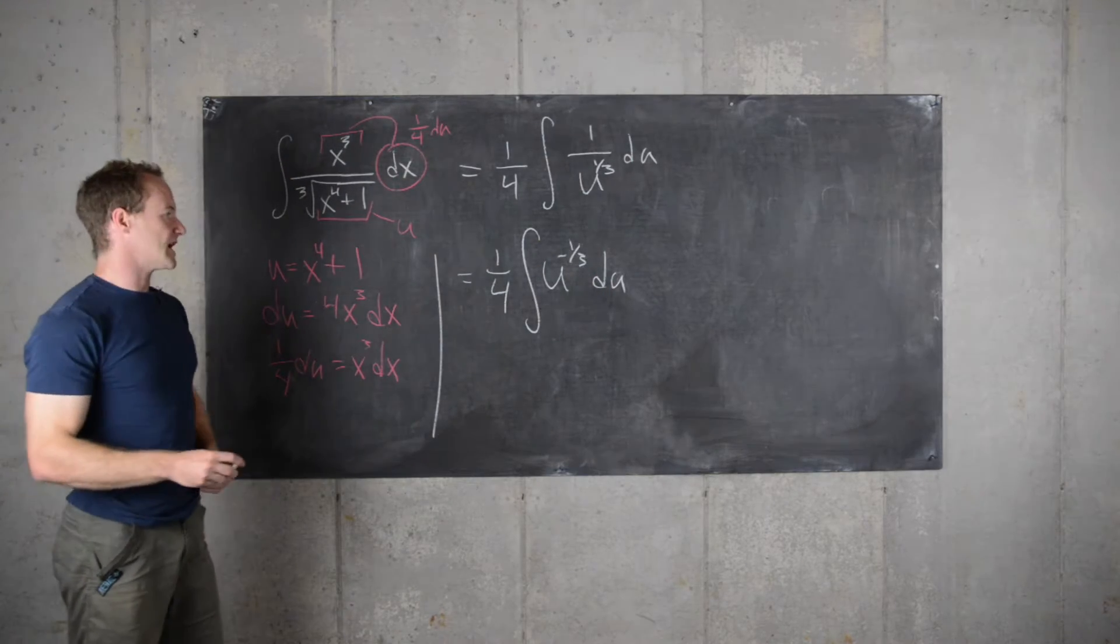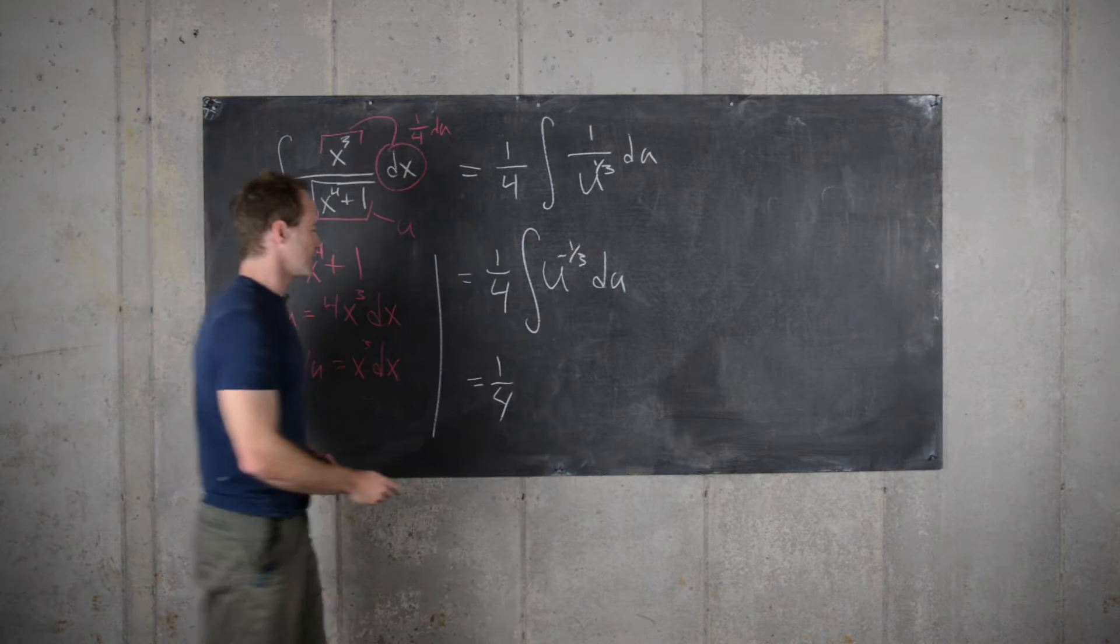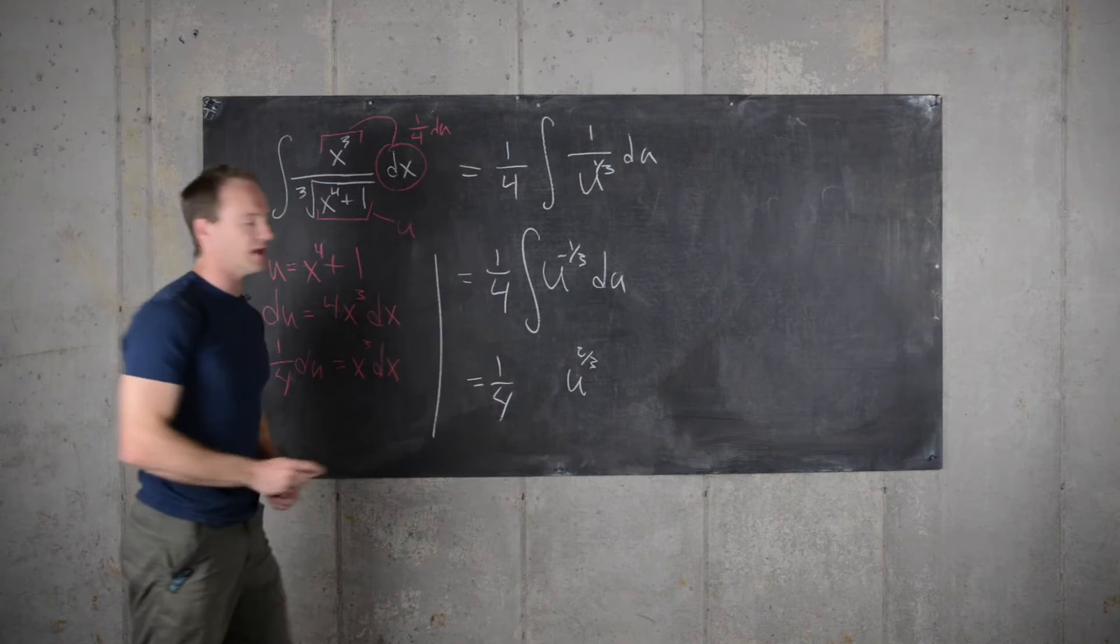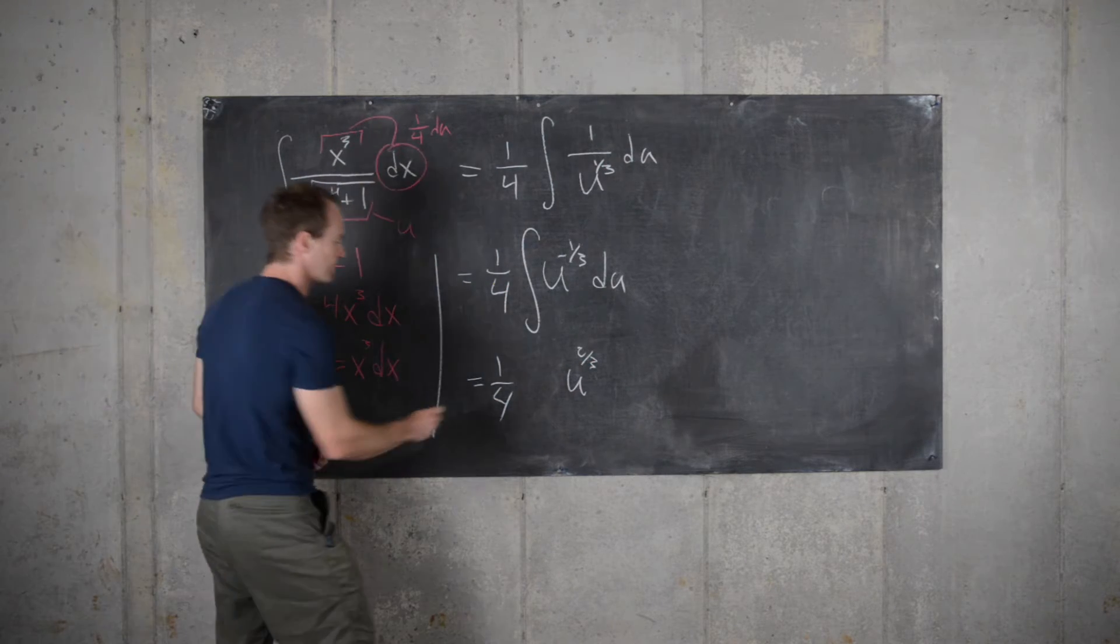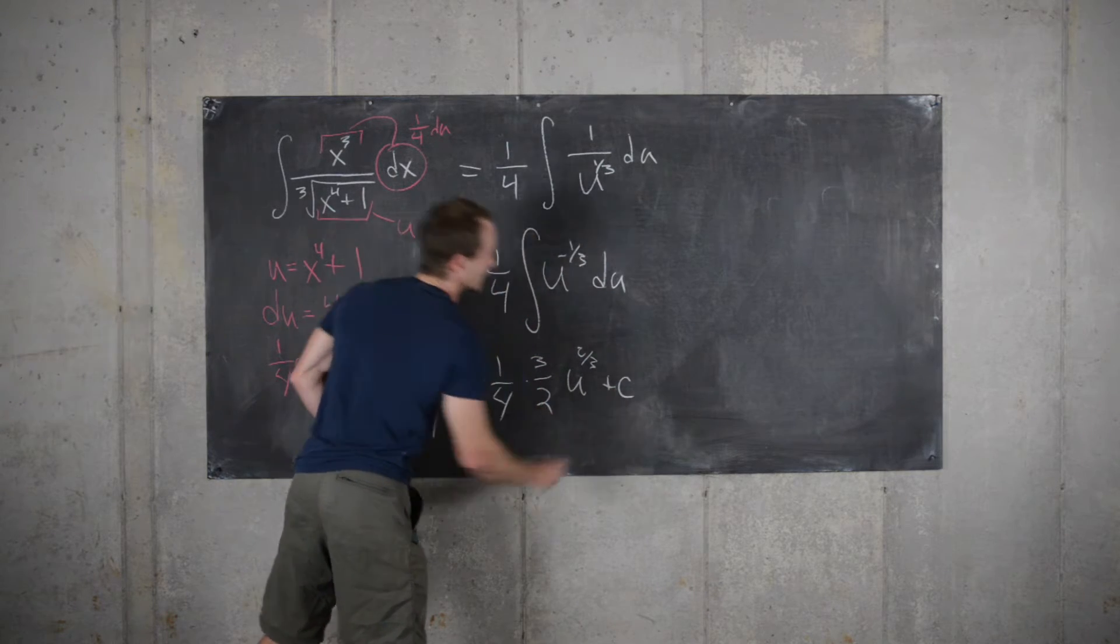And now we're all set. We can add 1 to the exponent. That'll be 1 quarter u to the 2 3rds, and then multiply by the reciprocal of the new exponent. So that'll be multiplied by 3 halves, and then we'll have plus a constant.